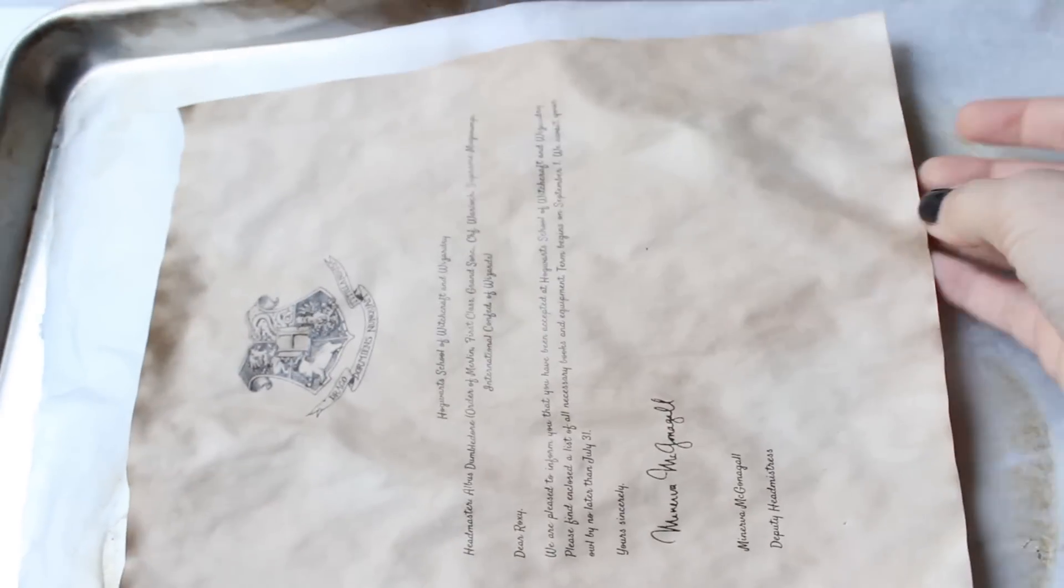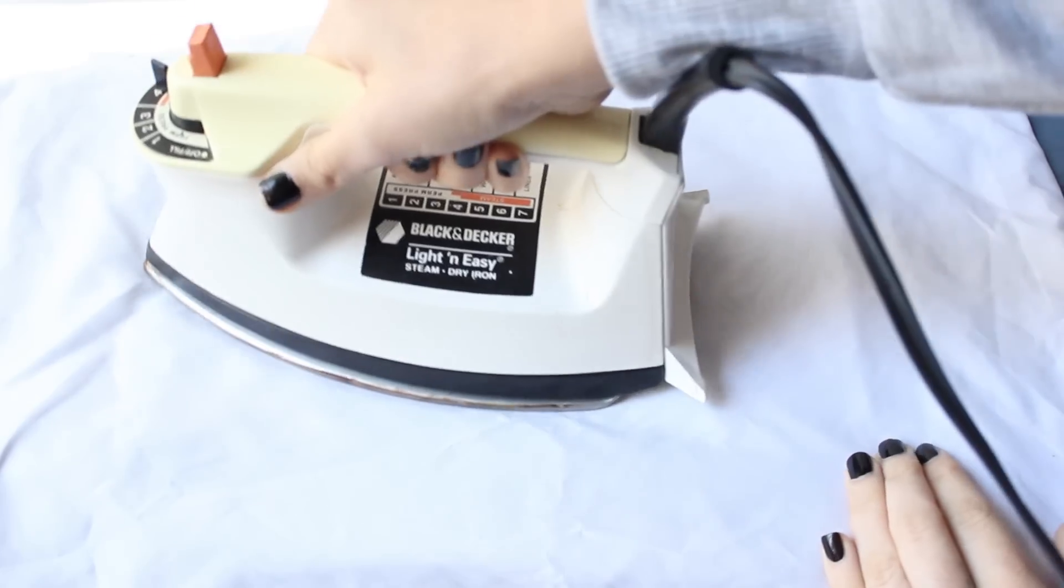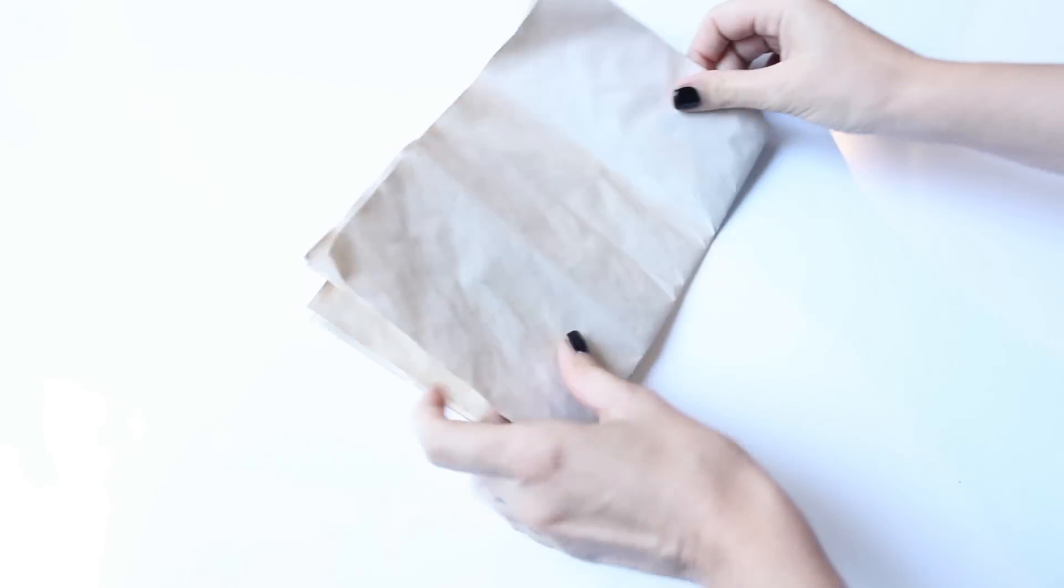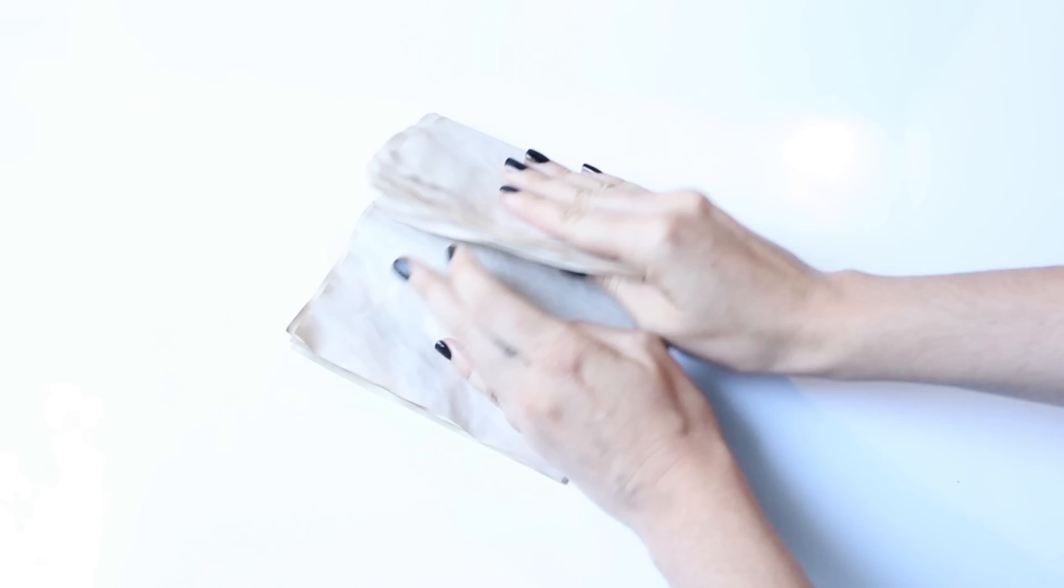After that, if it's too wrinkly you can iron it, but put on top of the letter a shirt or a piece of fabric to protect it. Then put all the sheets together, fold it and make it as flat as possible.